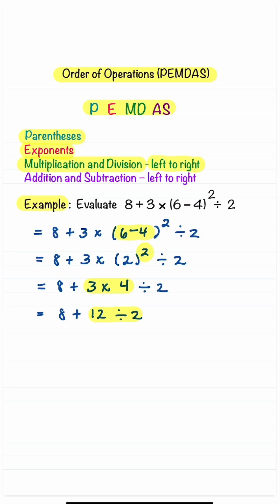Now we're going to do the division. So we have 8 + 12 ÷ 2, which is 6. For the last step, we're going to do addition and subtraction, working from left to right. We only have addition in this example, so we just add 8 + 6 and we get an answer of 14.